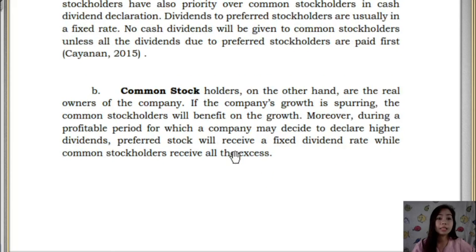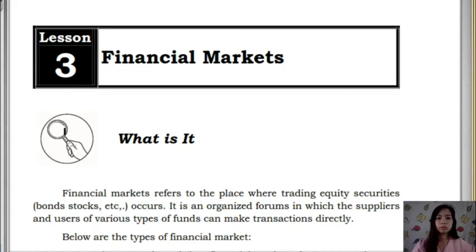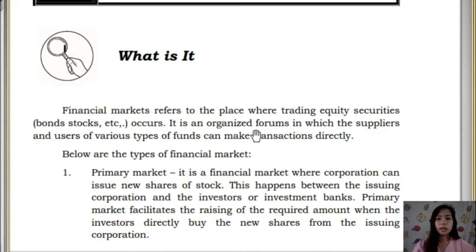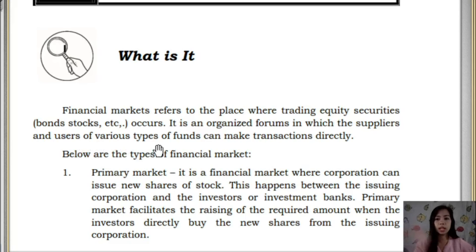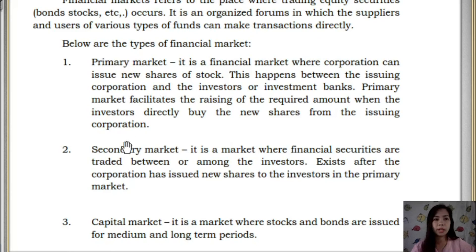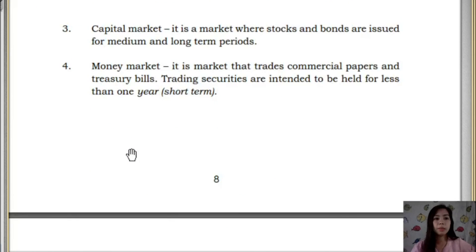On the other hand, common stockholders are the real owners of the company. If the company's growth is spurring, common stockholders will benefit from that growth — unlike preferred, which is fixed. Moreover, during a profitable period when a company declares higher dividends, preferred stockholders receive a fixed rate while common stockholders receive all the excess. Let's go now to the last lesson for Module 2: Financial Markets. Financial markets are where we trade financial instruments like bonds and stocks.